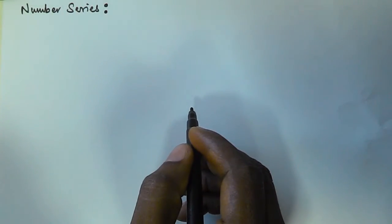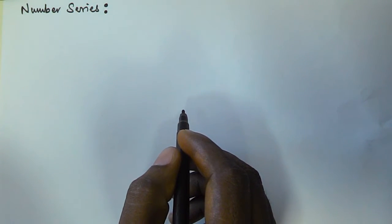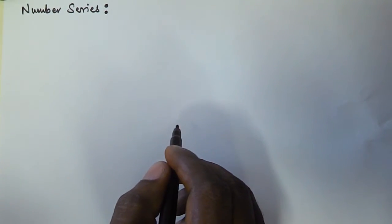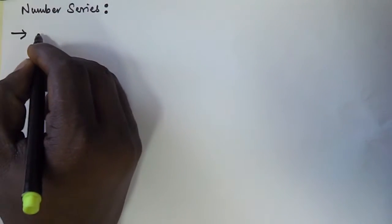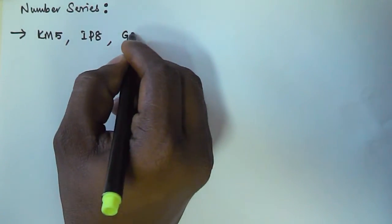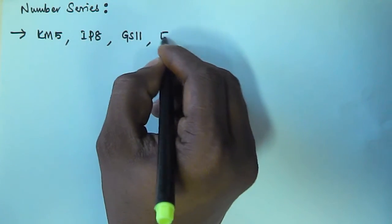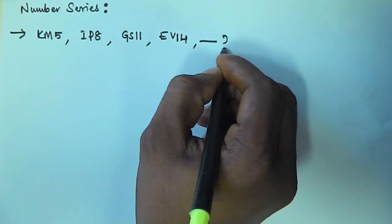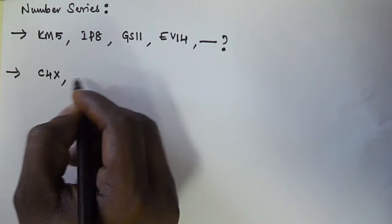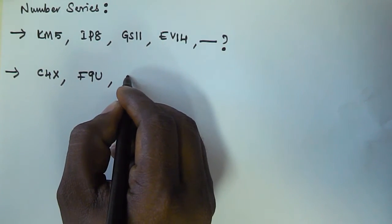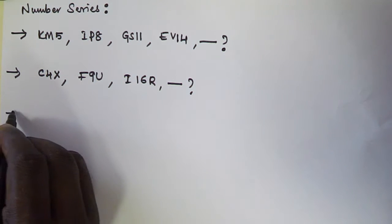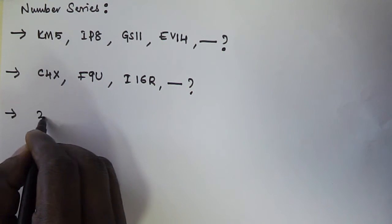Hello friends, in this video we will see another type of number series problems where alphabets are also included along with numbers. The first problem given is KM5, IP8, GS11, EV14 — what is the next term? The second problem is C4X, F9U, I16R — what is the next term?